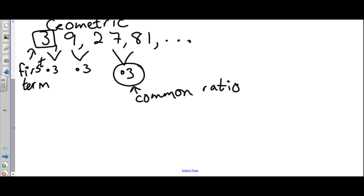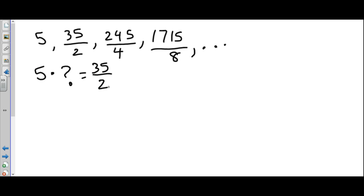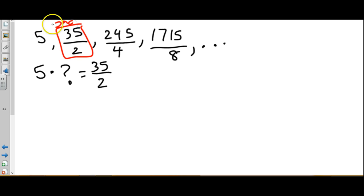Sometimes it's not as easy to see what the common ratio is going to be. So let's say we have the series 5, 35 over 2, 245 over 4, and 1715 over 8. And the way this is written, I have no idea what I would multiply 5 by to get 35 over 2. So when you have a series like this, it's easiest to take the second term and divide it by the first term.